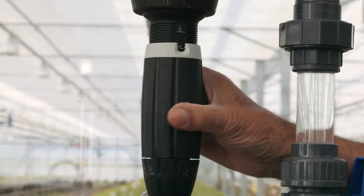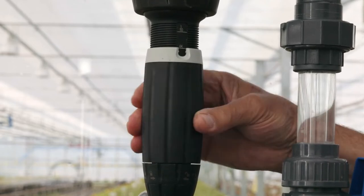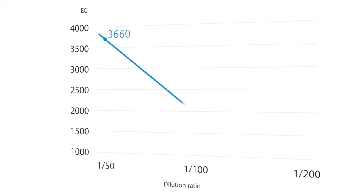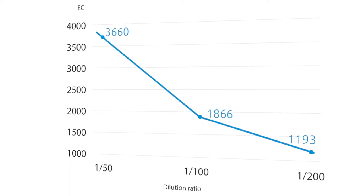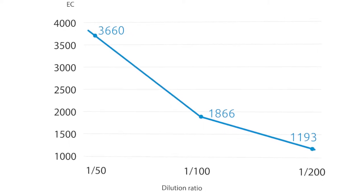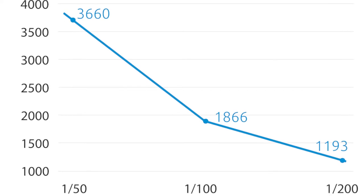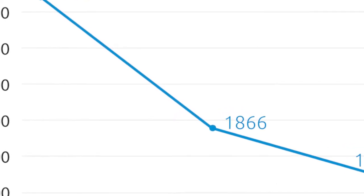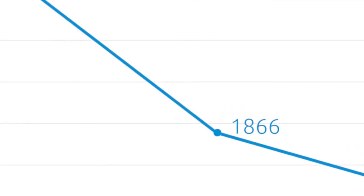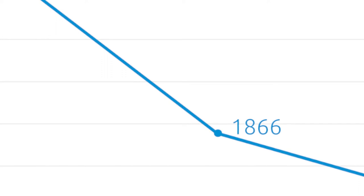We're going to run the diluter at one in one hundred one percent dilution and see if it actually gives us an output solution with a reading of approximately one thousand eight hundred microsiemens. This will tell us whether or not the diluter is actually working normally.